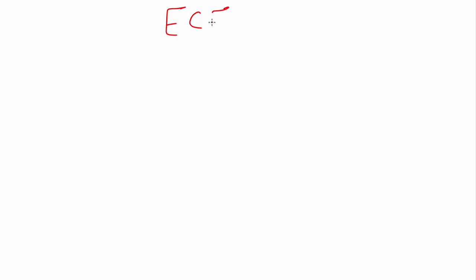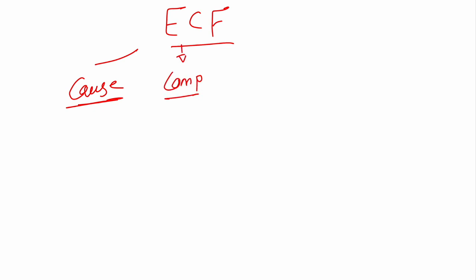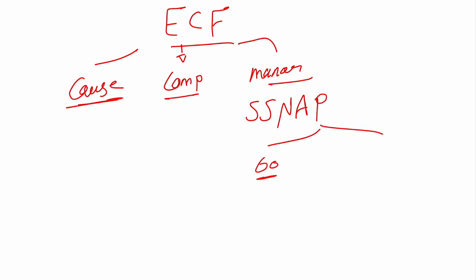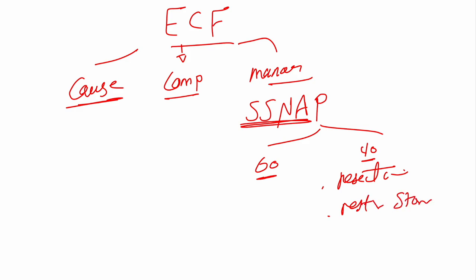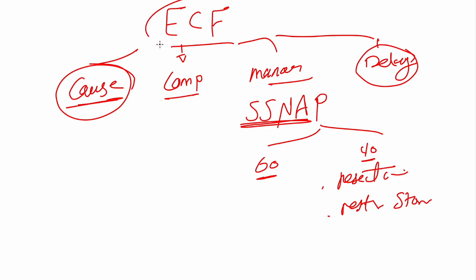In summary, enterocutaneous fistula causes include foreign body, radiation, and distal obstruction. Complications are remembered via the SNAP protocol — sepsis, nutrition, anatomical delineation, and planning. Sixty percent heal with SNAP management alone; 40 percent require surgery — either resection with primary anastomosis or resection with stoma formation. Factors delaying healing are the same as the original causative factors.